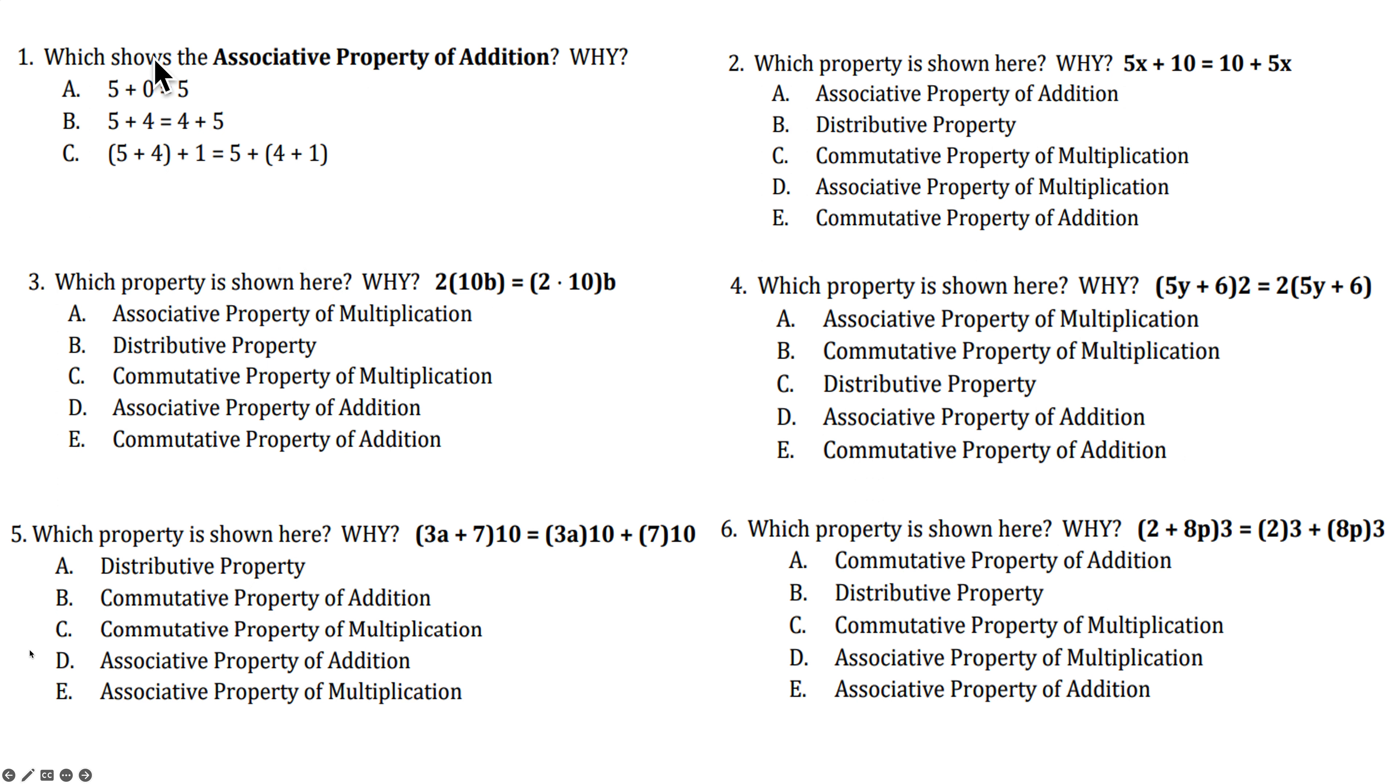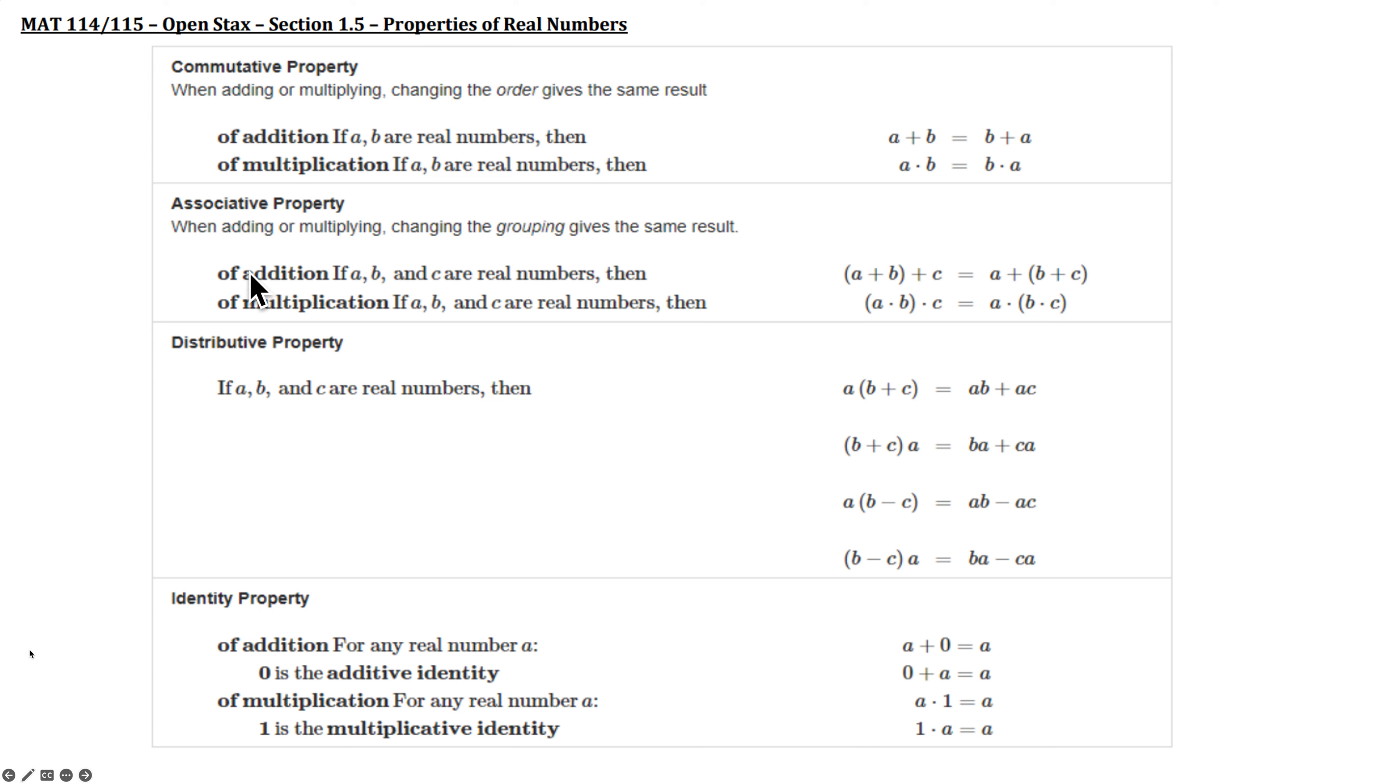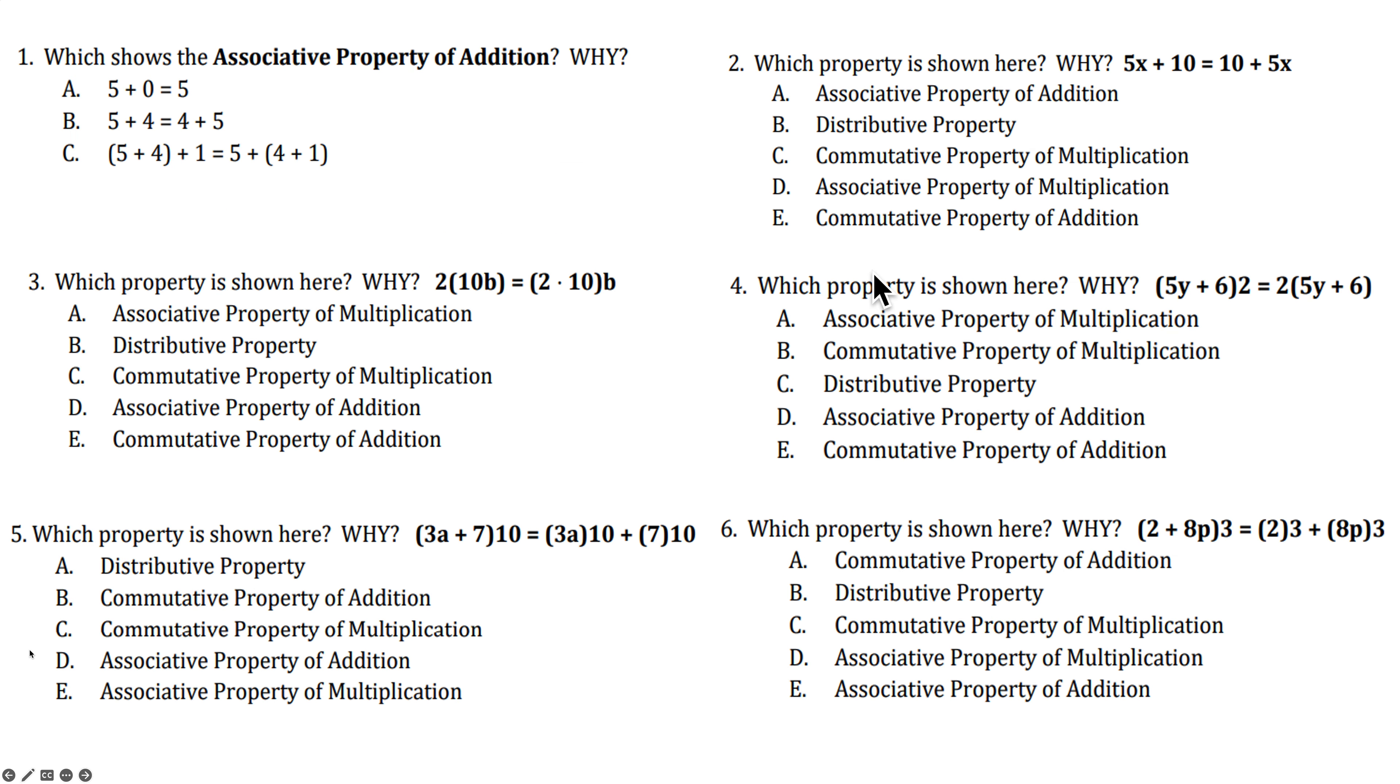So, examples. Which shows the associative property of addition? Well, the associative property of addition, remember, the order stays the same, A, B, C, A, B, C. There's parentheses that are changing around a different pair of items being added together. So we're looking for order. Nope, that's a zero. Order changed. So it's going to have to be C. Five, four, one. Five, four, one. Parentheses around the first plus sign of five and four. Parentheses around the second plus sign. So our answer is C, because the grouping of addition is being changed by the parentheses. Associative property is always parentheses.